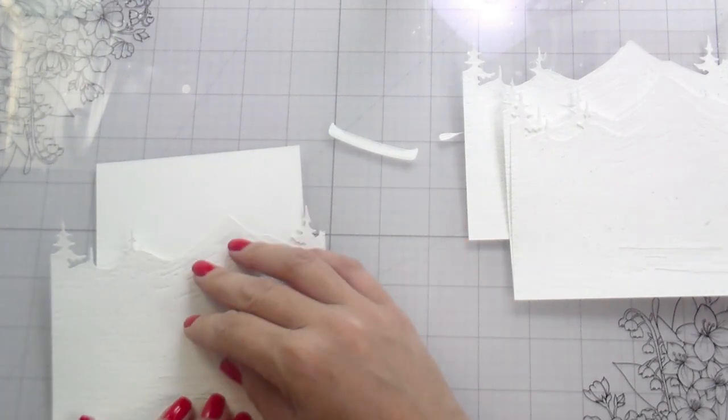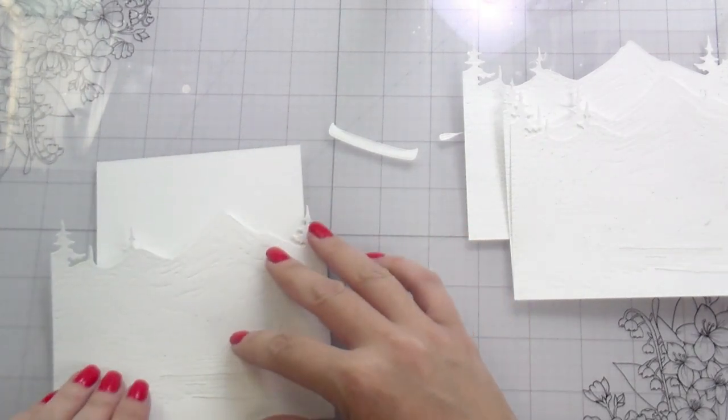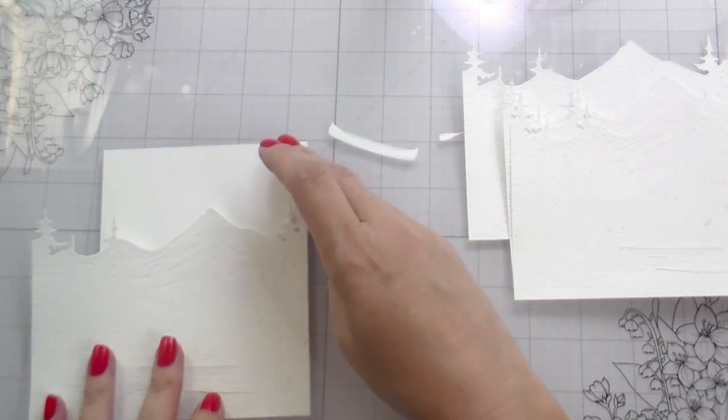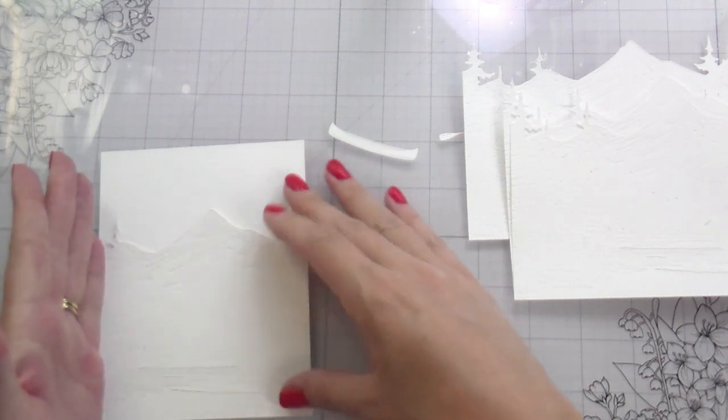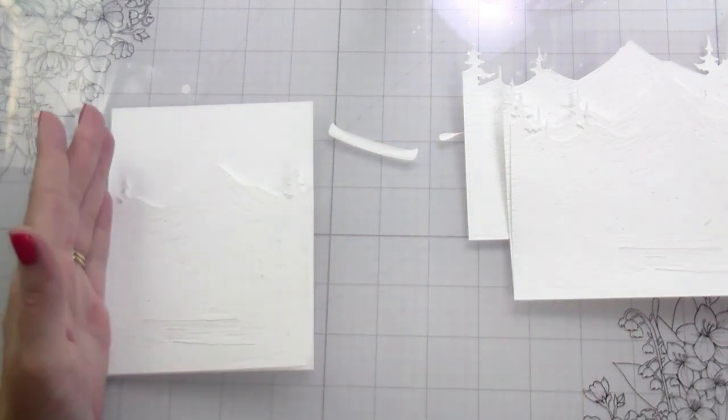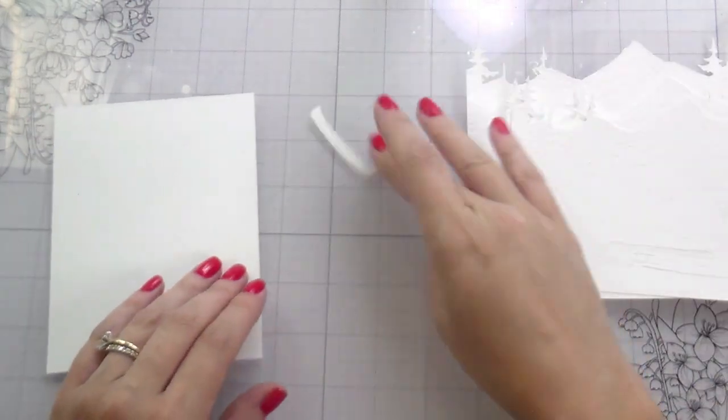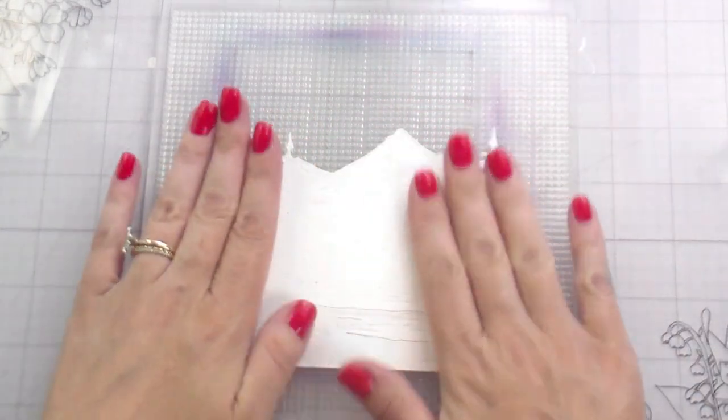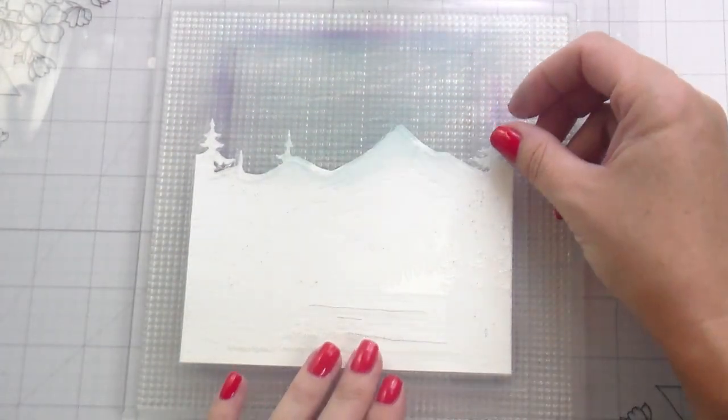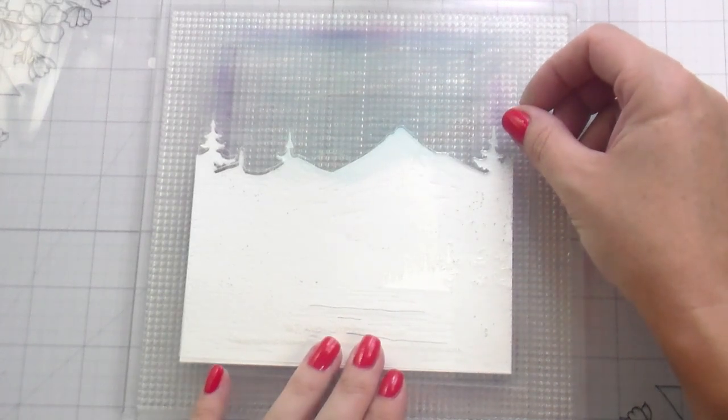Now we're going to get into the stenciling portion. If you're just here for the construction, you're probably going to want to jump to around the 15 minute mark. I got to do all the stenciling first. So here I'm just using my Altenew Sticky Mat to put my die cut piece in place, and then I am going to go in and do all of my ink blending.